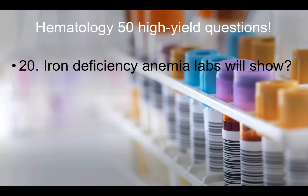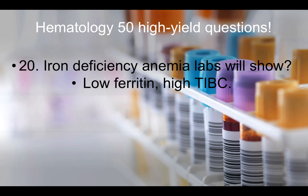Question number twenty: Iron deficiency anemia labs will show what? In a question stem, they'll give you lab values, and if you see low ferritin and a high TIBC, you should be thinking about iron deficiency anemia. Iron deficiency anemia: low ferritin, high TIBC.